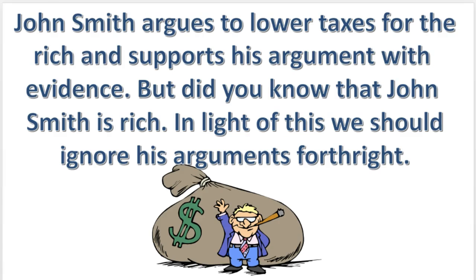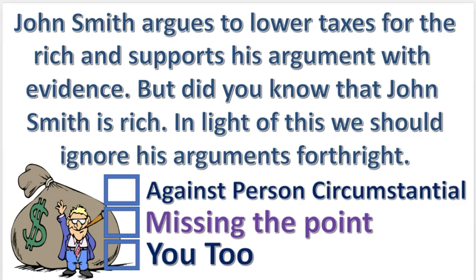Next practice problem. What fallacy is committed in this argument? Press pause. The answer will appear in three, two, one. Argument against the person — circumstantial. The claim is that the rich man is predisposed to argue as he does.